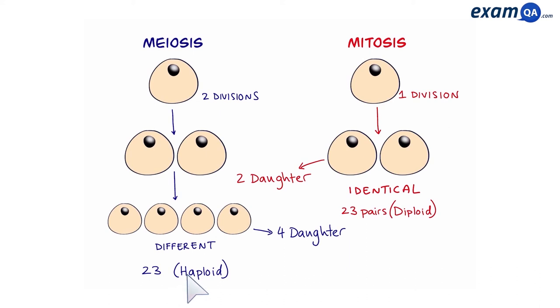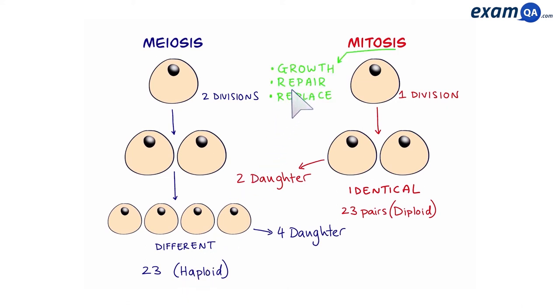And most importantly, why are there two types of cell division? Well, the purpose of mitosis is to grow, repair, and replace cells, whereas meiosis is to produce gametes so you can have offspring.